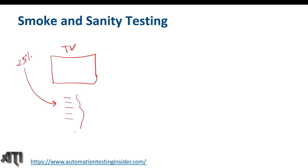Before the testers go for testing those 25 percent of the features, what they're going to do first is test the critical functionality of this TV. Because this is under development, the build is not stable, so they will do high-level testing on critical functionalities first. They will plug in the power cable of the TV and switch it on to make sure the TV is getting switched on properly.